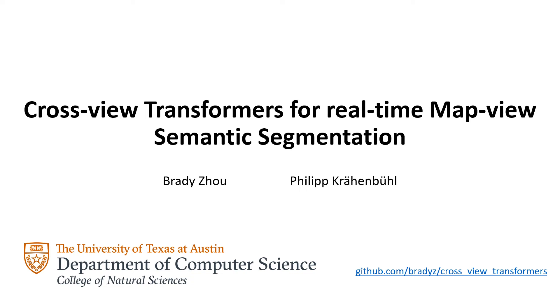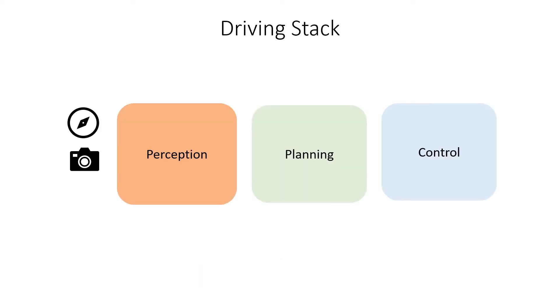In this work, we present cross-view transformers for real-time map view semantic segmentation. Autonomous driving consists of perception, planning, and control.